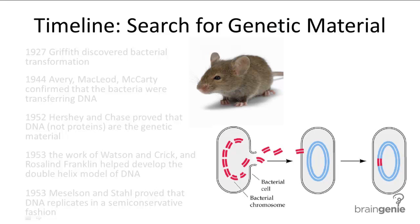We've actually broken it down into three videos so that they can be shorter, because there's a lot of information to cover. It begins in 1927 when Griffith discovered bacterial transformation. He was experimenting on mice with two strains of bacteria: a pathogenic strain and a non-pathogenic strain.